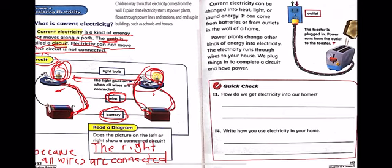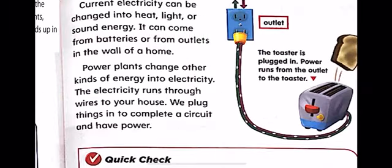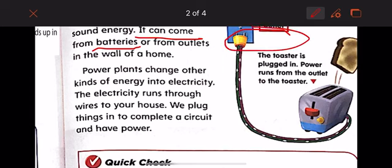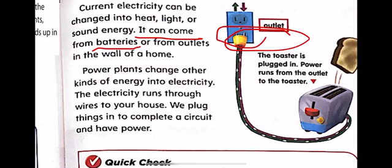Current electricity energy can be changed into heat, light, or sound energy. It can come from batteries or outlets in the wall of a home. What is an outlet? This is an outlet — here on the wall.